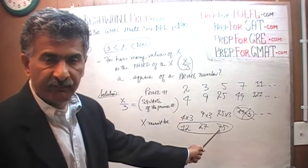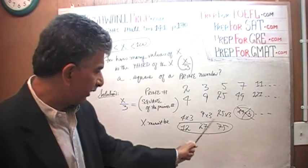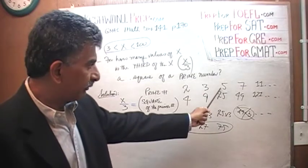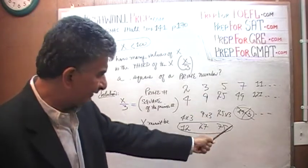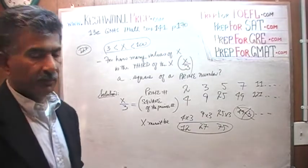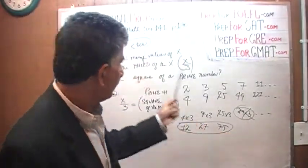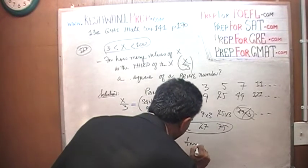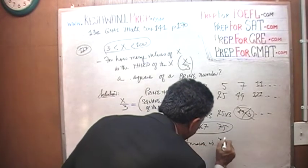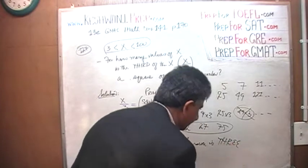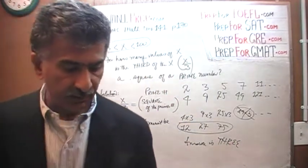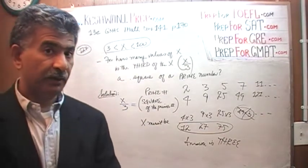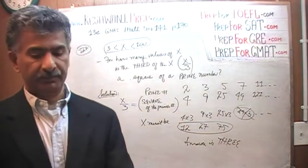75 is another such number where, if we take a third of 75, we get 25, which is a square of a prime number. And that is it — there are no other numbers, because the next one would be 49 times 3, which falls outside the range. So the answer is 3.